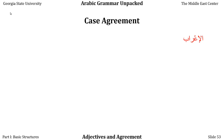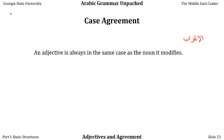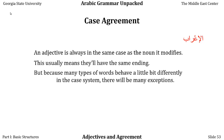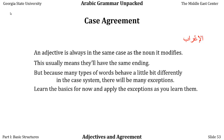Lastly, let's take a look at case — al-i'rab. An adjective is always in the same case as the noun it modifies in a phrase. This usually means they'll have the same ending, but there are many exceptions we'll pick up as we go along. Many types of words behave a little differently in the case system. We'll do a whole lesson on the case system later so you can see it all at once. Learn the basics for now and apply the exceptions as you learn them.